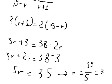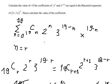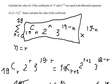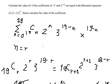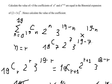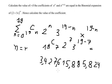After finding r equal to 7, we substitute back to find the coefficient. We compute 19C7 times 2 to the power of 7 times 3 to the power of 19 minus 7, which is 3 to the power of 12. This is the coefficient value we need to find.